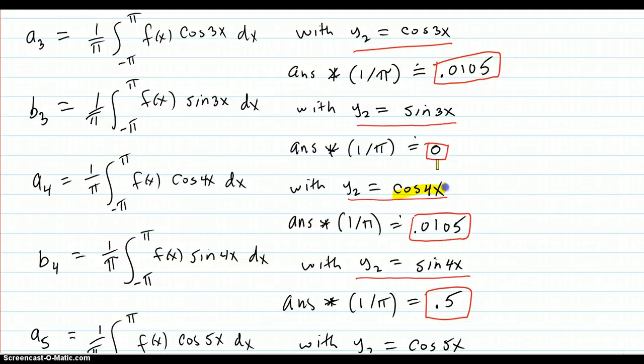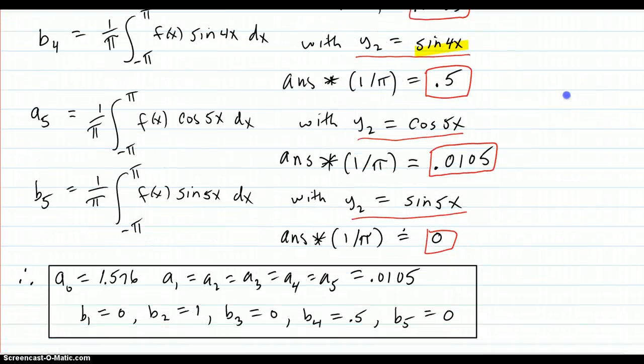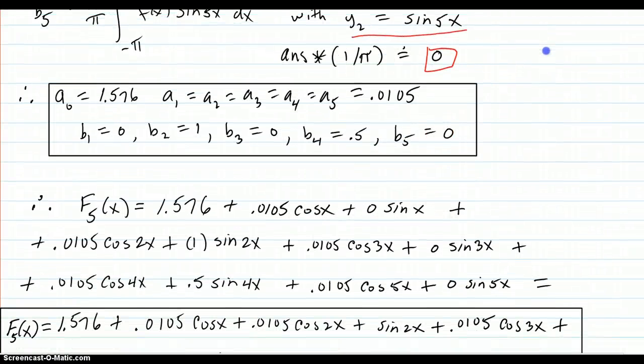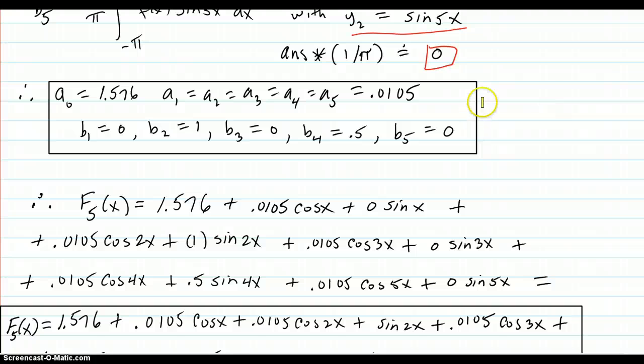Be careful to put in the right y2 every time. Otherwise you get the wrong answer. Run some of these to verify these answers. And then you get all your coefficients and you write them all down. Turns out that all the a's turned out to be 0.0105. There's your a0.